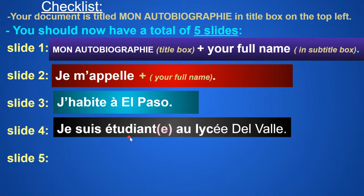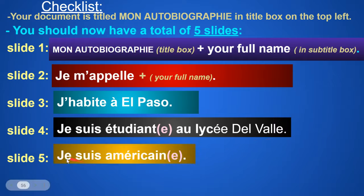Slide four, Je suis étudiante au lycée d'Elvain for the ladies. Je suis étudiant au lycée d'Elvain for the gentlemen. Slide five was your nationality. Je suis américaine, ladies. Je suis américain, gentlemen. Or je suis mexicaine, je suis mexicain, if that applied.